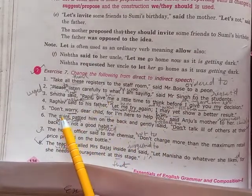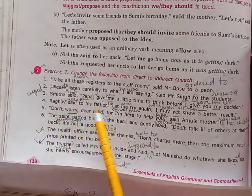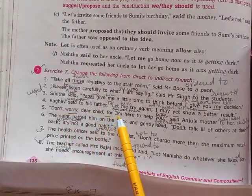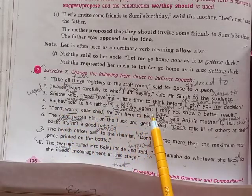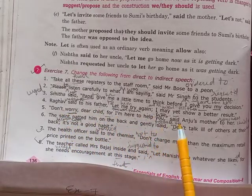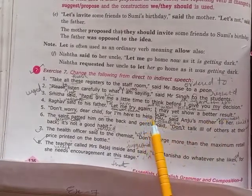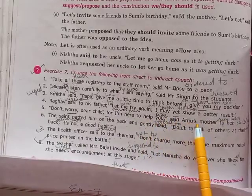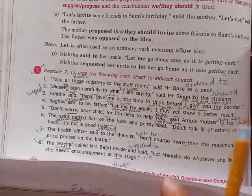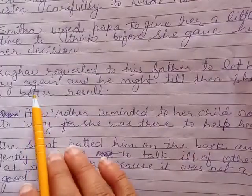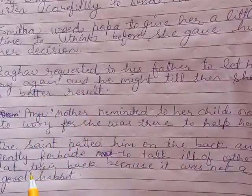Next: Raghav said to his sister, 'Let me try again, I may yet show a better result.' When we change this, it will become: Raghav requested his father — here Raghav is taking permission.